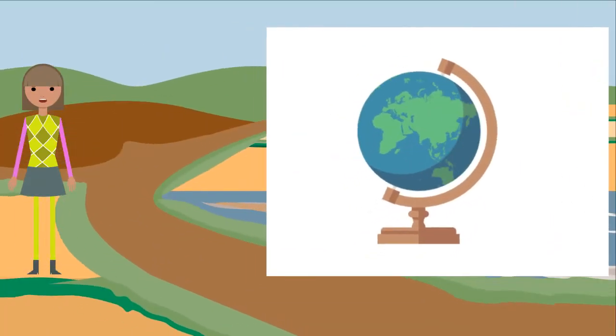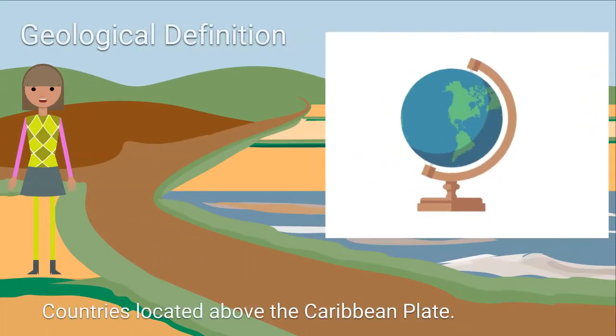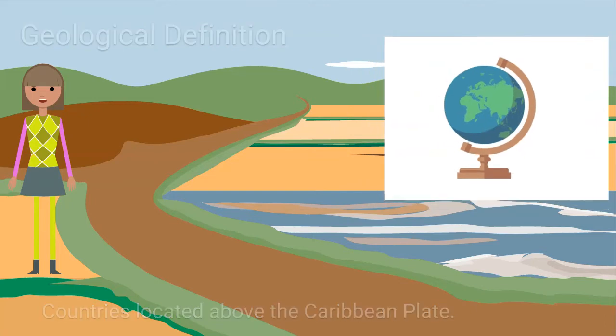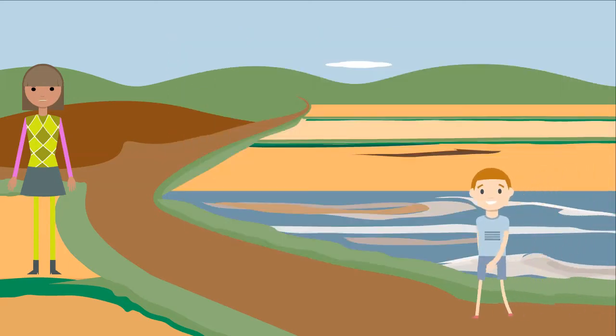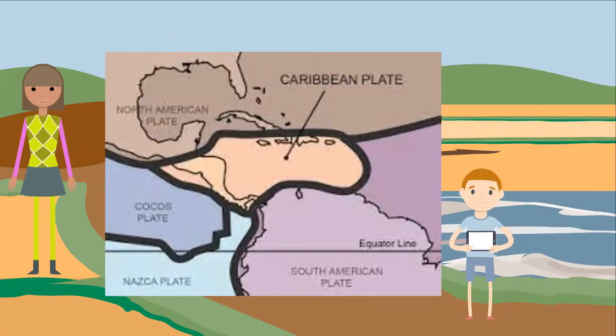The geological definition includes countries that are located directly above the Caribbean plate. The plate being referred to is a massive slab of rock located above the earth's mantle. This image here shows the boundaries of the Caribbean plate. To the north is the North American plate, to the west is the Cocos Plate, to the south is the Nazca Plate, and to the southeast is the South American plate.